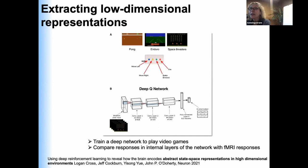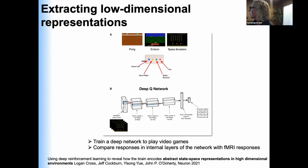A fundamental problem that every biological organism has to solve is to reduce the dimensionality of the information it receives. Information in the external world is practically infinite, and we have to find a very small subset of information that is useful for guiding behavior. And how this happens is a longstanding question that garners more and more interest because it's becoming somewhat tractable.